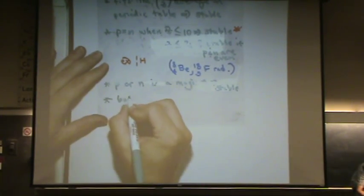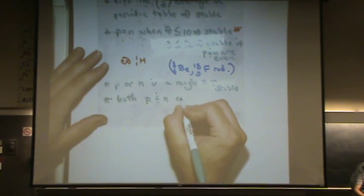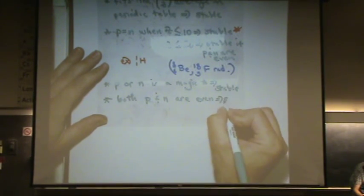If both protons and neutrons are even numbers, it's stable.